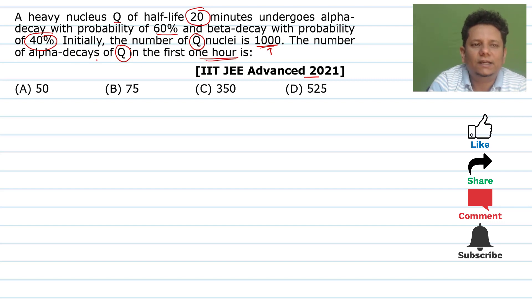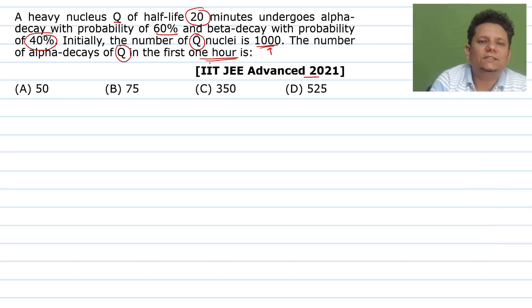Number of alpha decays of Q in the first one hour - how many alpha particles we will get, we have to find that. Now, to solve this problem, I'll show you two methods. One method is if you remember the formula and have practiced it well, then this question will be solved in 2-3 steps. If you forget the formula, then I'll show you the desi jugaad method as well, just in case you forget.